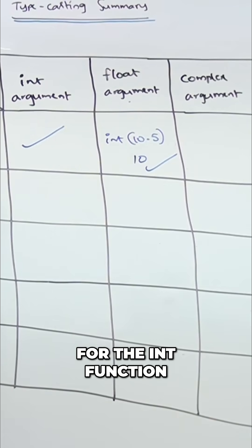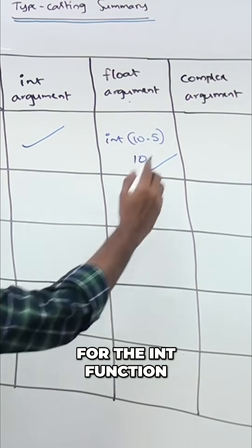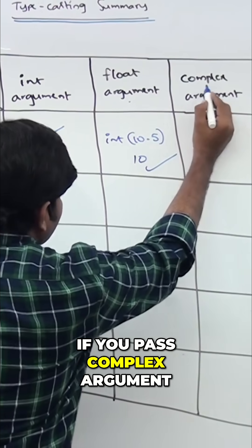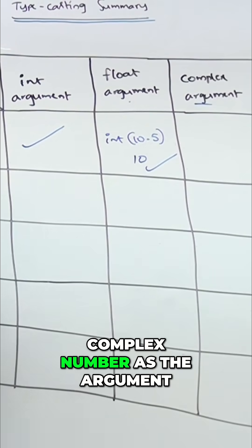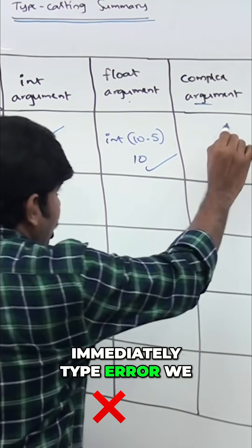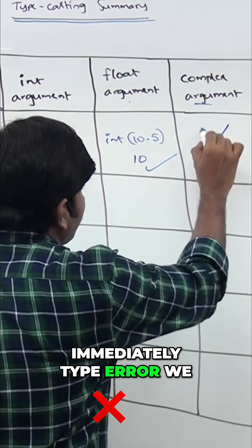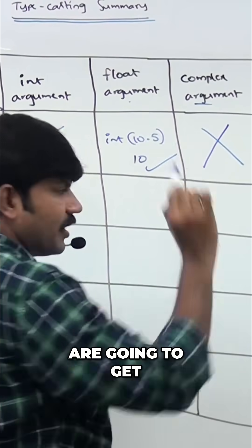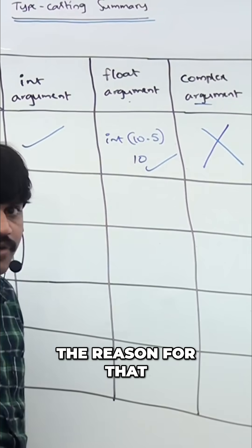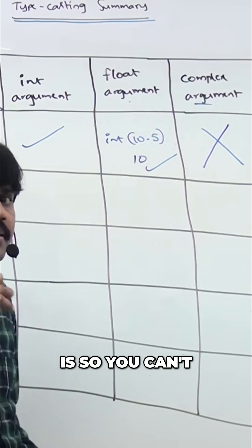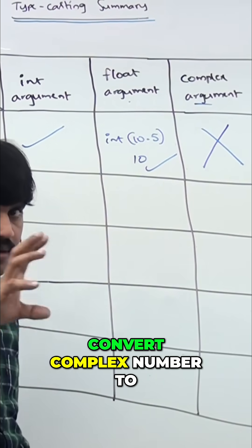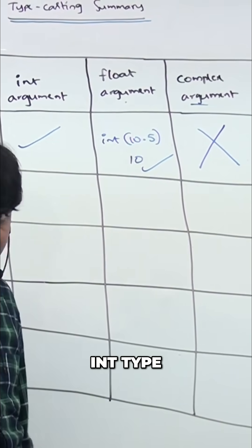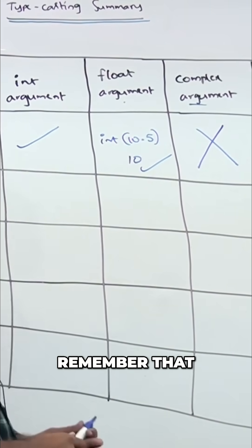Next, for the int function, if you pass a complex number as the argument, you will immediately get a TypeError. The reason is that you cannot convert a complex number to int type. Remember that.